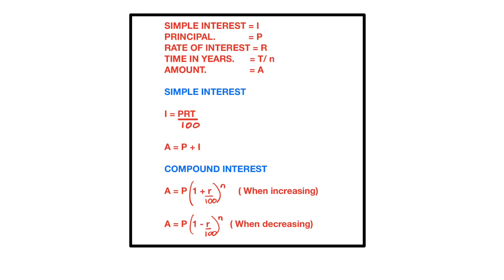To find simple interest we use: Interest = PRT over 100. If they ask you to find the principal, you have to make P the subject, or R or T depending on your question. In some simple interest questions they will ask you to find the interest and then find the total amount. Total amount is equal to principal plus interest.